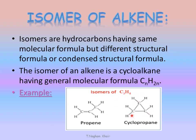In cyclopropane, all the bonds are single covalent bonds. However, in propene we have a double bond. Cyclopropane has a cyclic structure, while propene has an open chain.